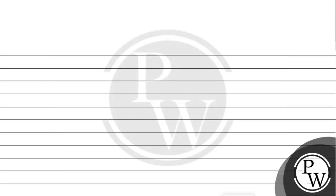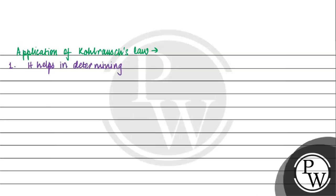Moving on to the next part — application of Kohlrausch's law. The first application is that it is used for finding out the limiting molar conductivity. It helps in determining the limiting molar conductivity of the electrolyte.